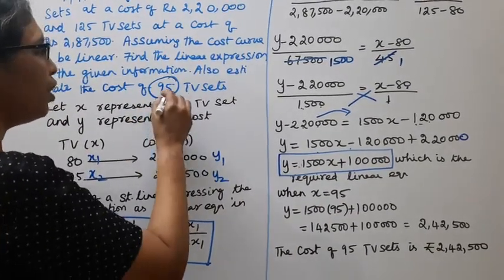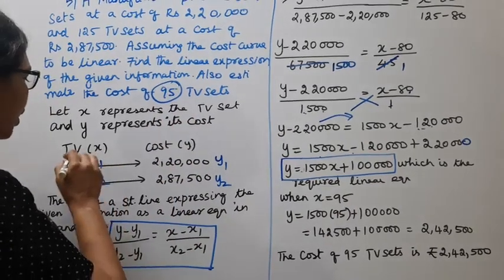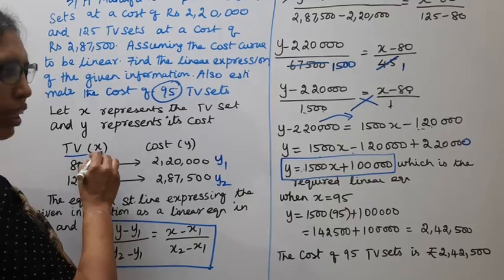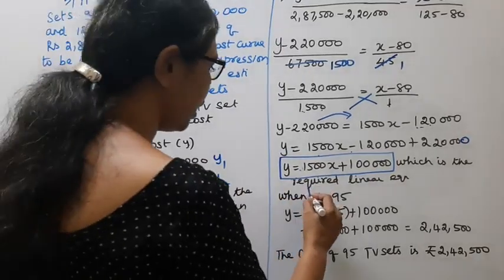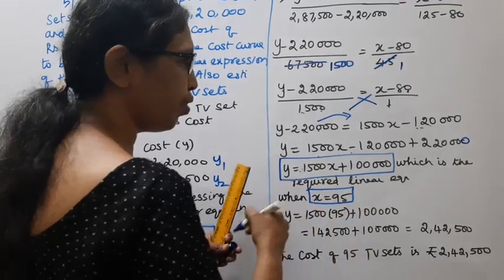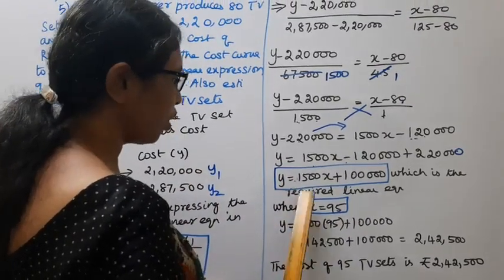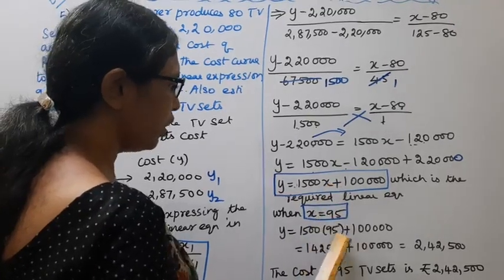Second part: cost of 95 TV sets. TV sets is x. When x equal to 95, y is the cost.